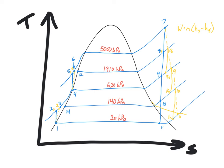From state twelve we go through a steam trap, dropping down to state thirteen. State thirteen is at the same pressure as states fourteen and ten. The trap is a constant-enthalpy process — you can't directly see that on a TS diagram — but as pressure drops, some steam is generated, so state thirteen has some quality at that lower pressure. Similarly, state fourteen traps down to state fifteen at the lowest pressure, going back to the condenser.